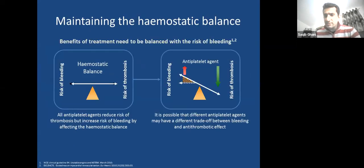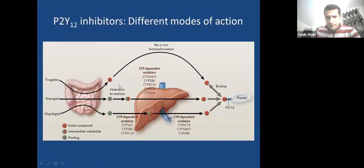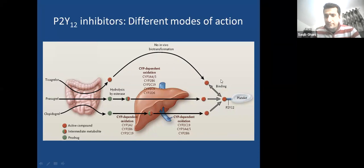In most centers, Ticagrelor has replaced clopidogrel and even Prasugrel for management of acute coronary syndrome. We must maintain a balance between hemostasis and bleeding risk — Ticagrelor has been shown to be more effective with similar bleeding risks. Most antiplatelet drugs work on the P2Y12 receptor: clopidogrel, Prasugrel, and Ticagrelor all target P2Y12. Clopidogrel and Prasugrel must be metabolized from inactive to active form, whereas Ticagrelor is already in active form, bypassing liver metabolism.